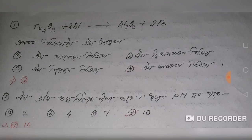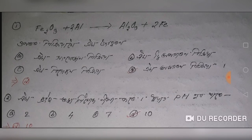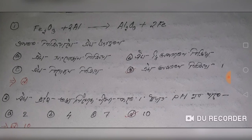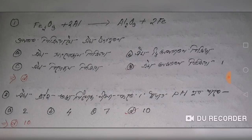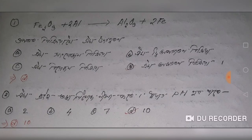I will ask you the first question. The reaction is: Fe2O3 plus 2Al gives Al2O3 plus 2Fe. Is it a bigger reaction? At what temperature does it occur?